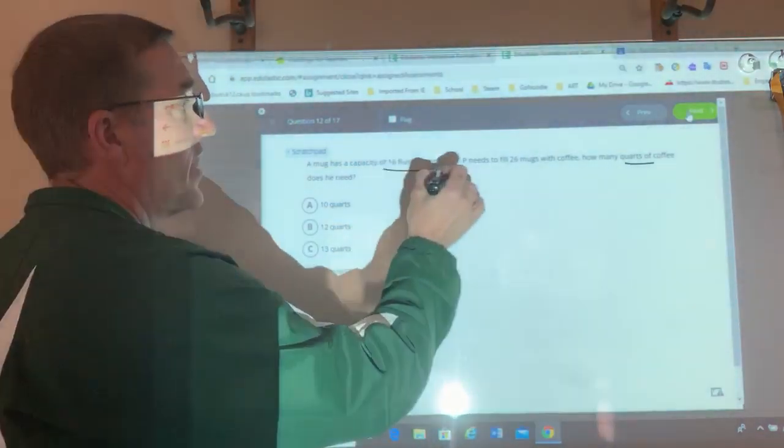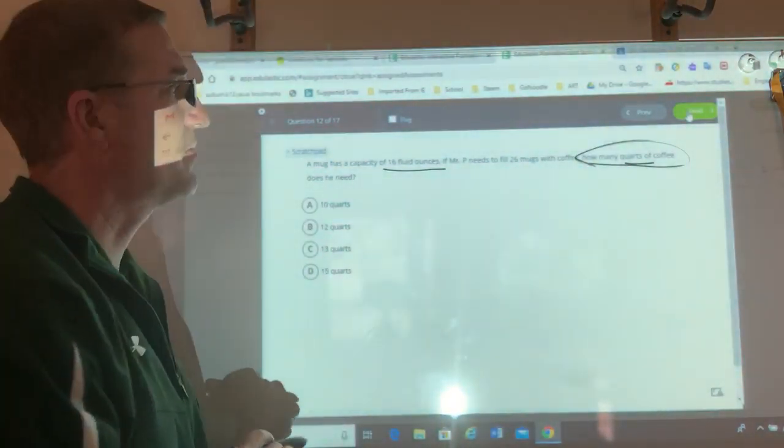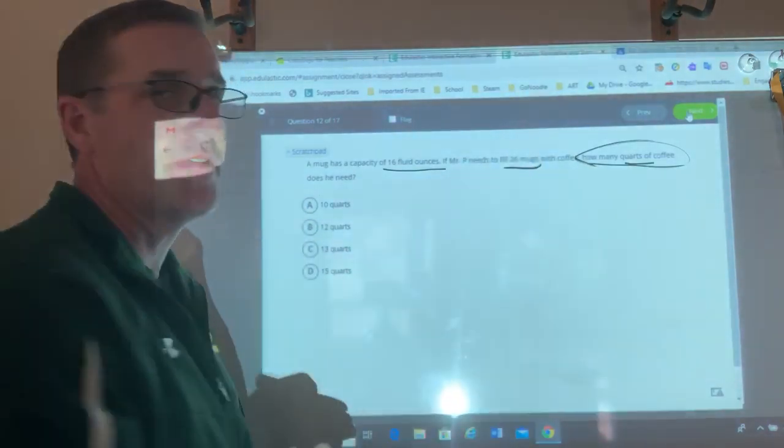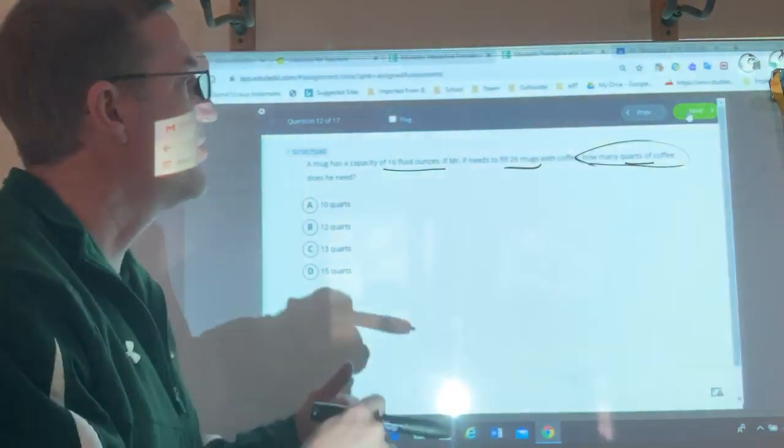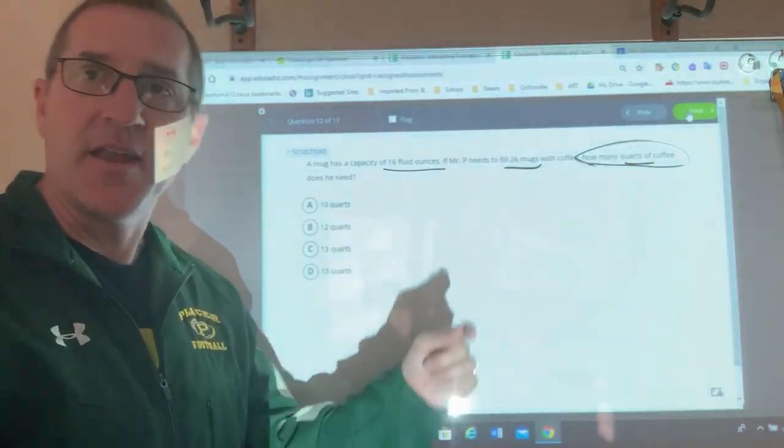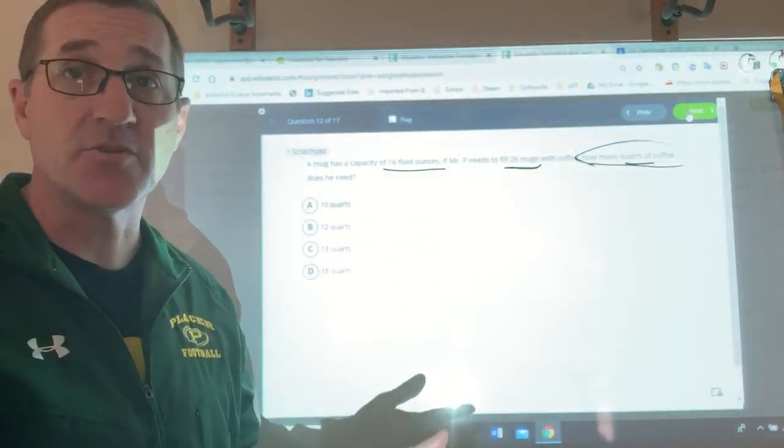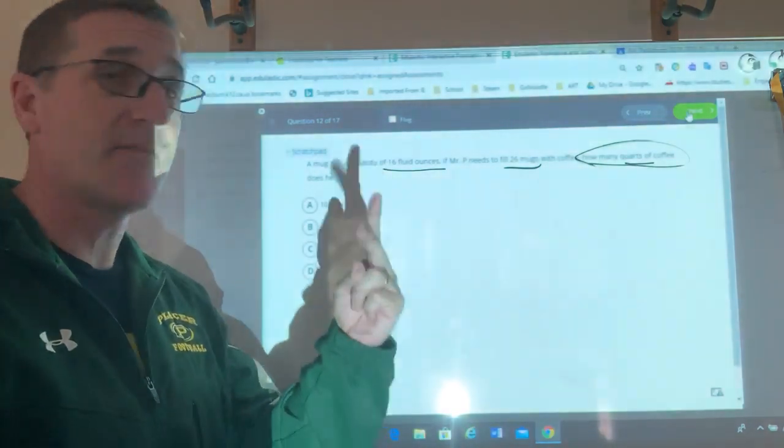This is what I know. This is what I need to find. How many quarts, right? And there's 26 mugs of coffee. So what do I need to do first? If you said I need to multiply 26 times 16 to get the total number of ounces, you're right. If I have one mug, it's 16 ounces. If I have two, it's 32.